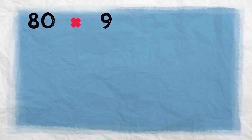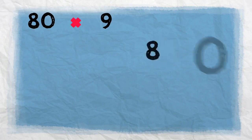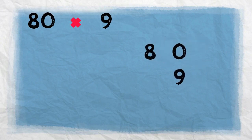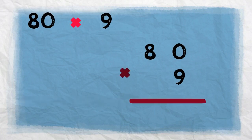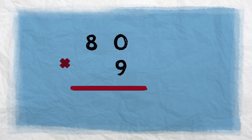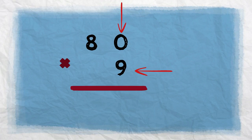And one last example: 80 times 9. We stack up the numbers, ones places in one column and tens places in one column. Then we draw the line at the bottom and put the multiplication sign on the left. For the first step, we start with the bottom digit multiplying by the ones digit of the top number: 9 times 0. We know that any number multiplied by 0 equals 0, so 9 times 0 equals 0.